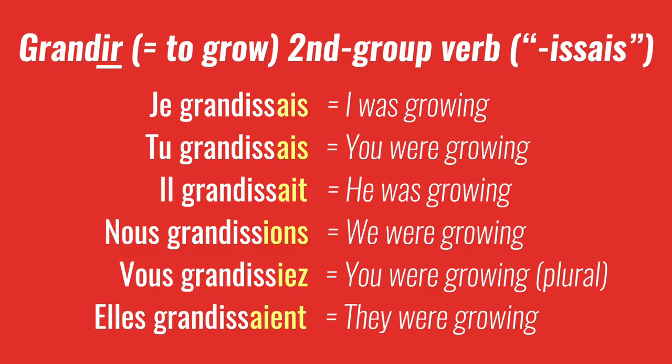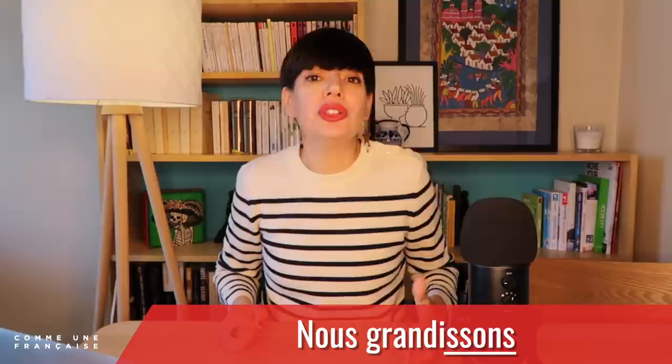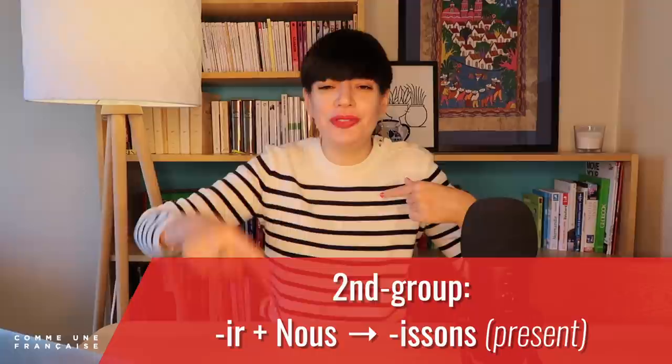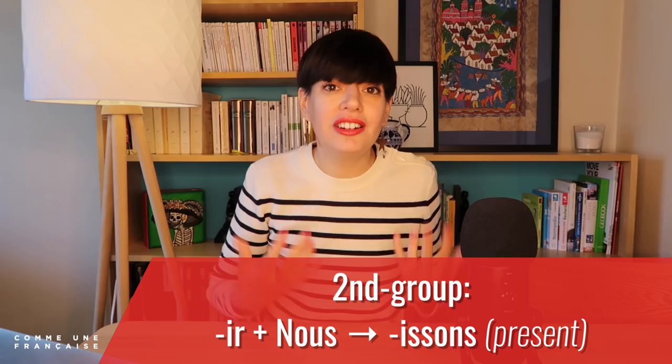And that's where you might be thinking: okay, Géraldine, how do I know which verbs are in the second group? Well, the second group is defined as — and don't be angry at me — the verbs ending in -ir which make '-yissons' with 'nous' in the present tense. So we have 'nous grandissons' for 'grandir.' As a French person this is intuitive, but for someone learning French as an adult, you have to learn which verbs are in the second group. I'm so sorry about that.